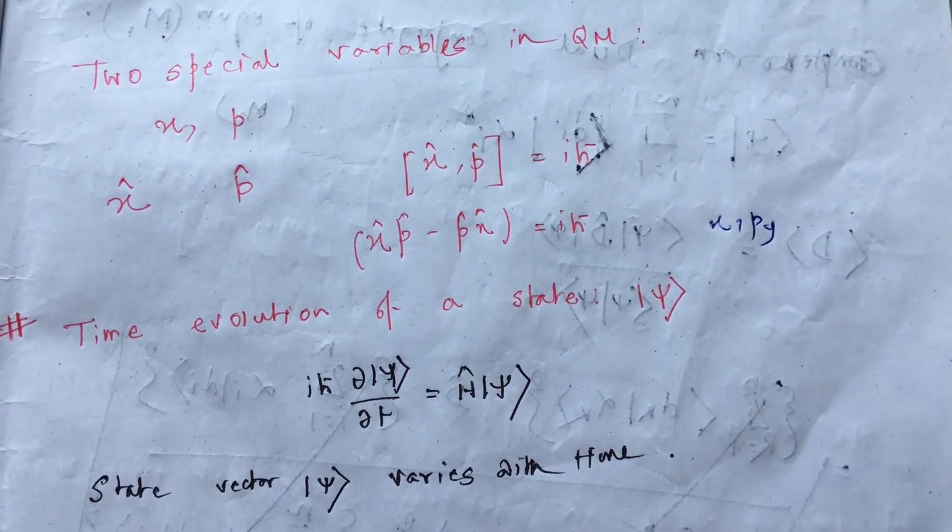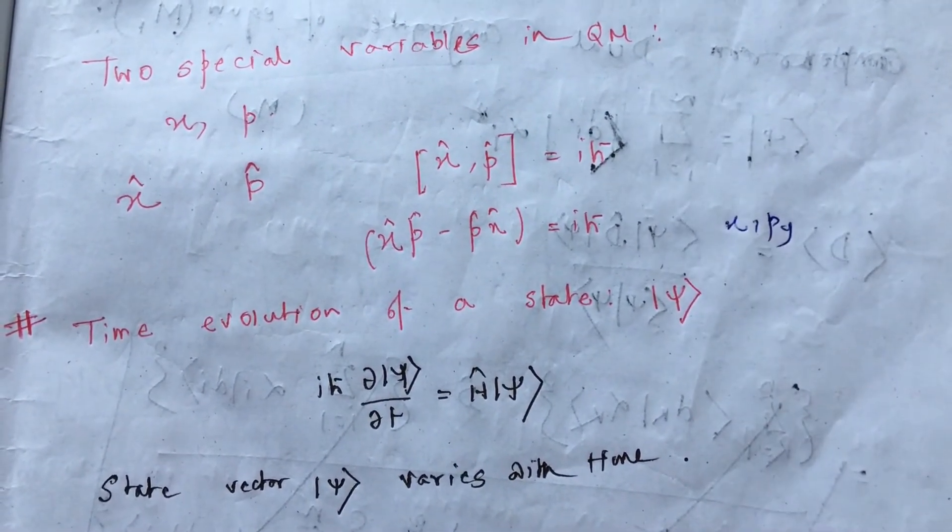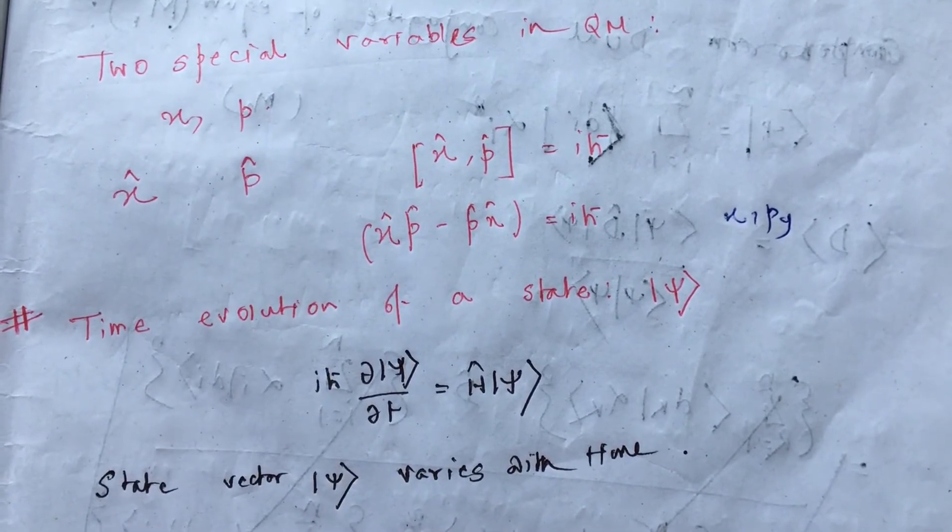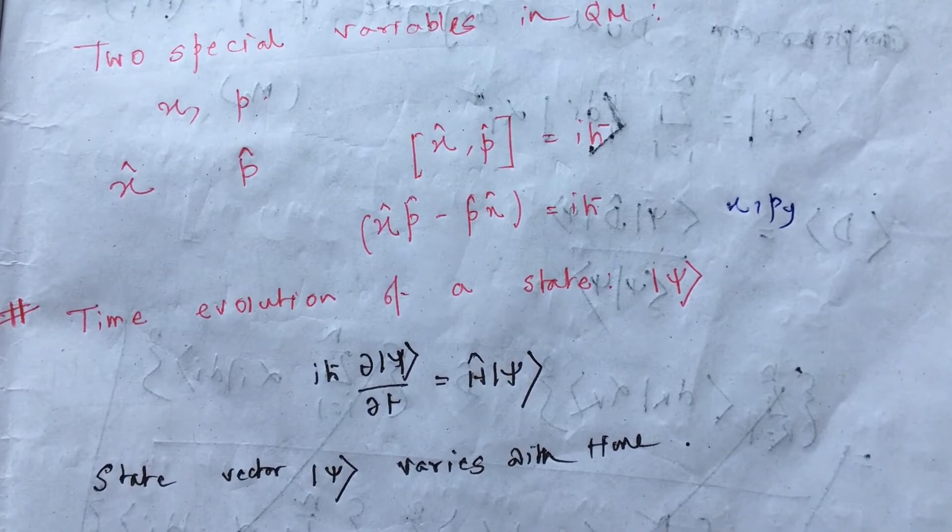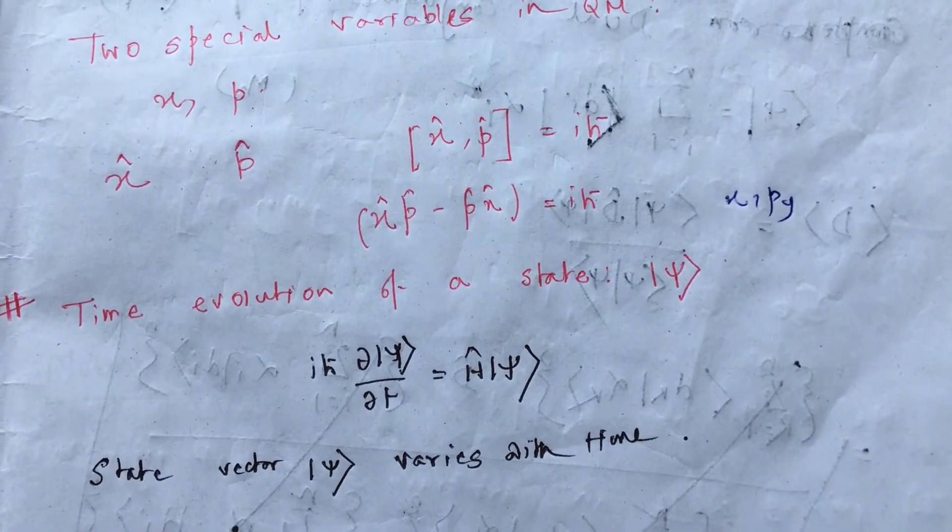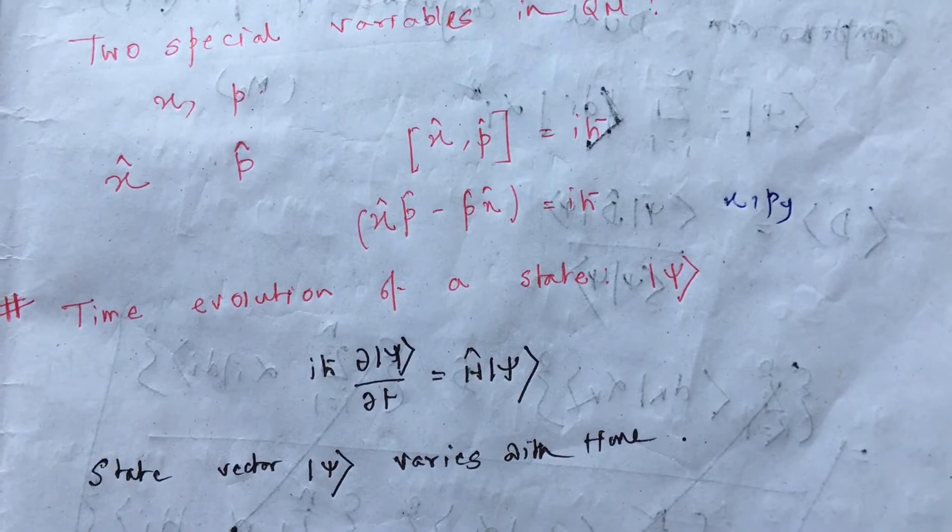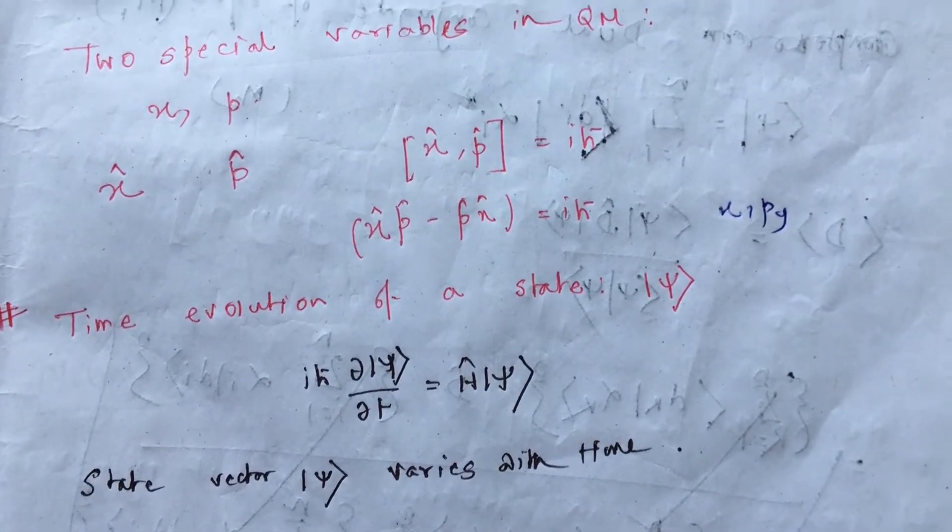Let's talk about two special kinds of variables in quantum mechanics. These are position and momentum. Both of these are actually Hermitian operators because their eigenvalues are real. We can't have imaginary position values. We can't have imaginary momentum values.